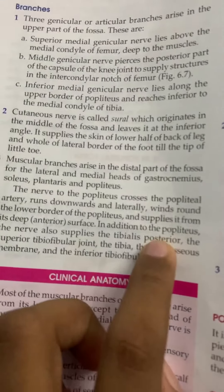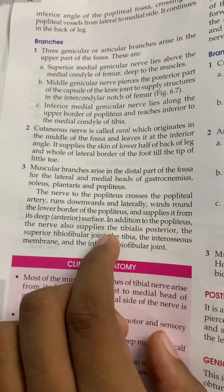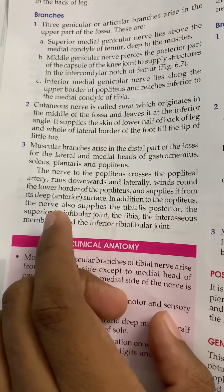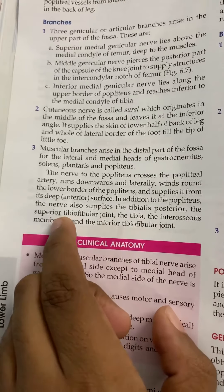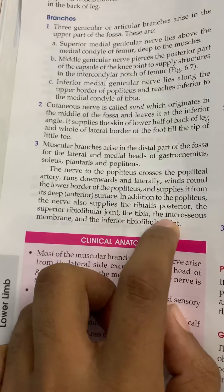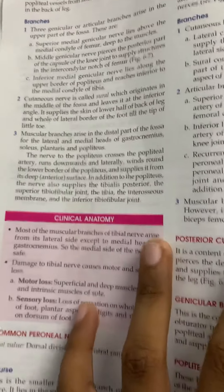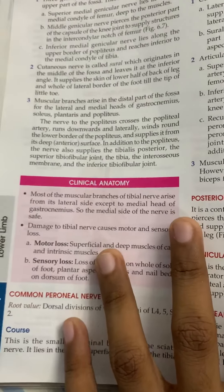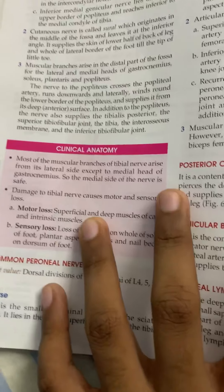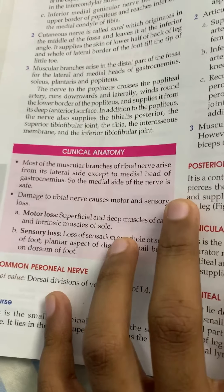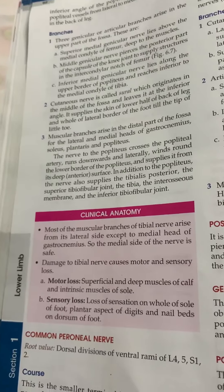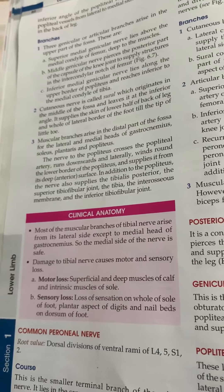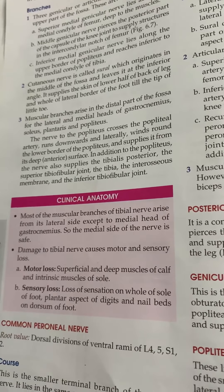The nerve to the popliteus, in addition to the popliteus, also supplies the tibialis posterior, the superior and inferior tibiofibular joints, the interosseous membrane, and also the tibia. Damage to the tibial nerve causes dorsiflexion, because the tibial nerve supplies the muscles responsible for plantar flexion.